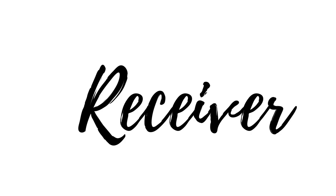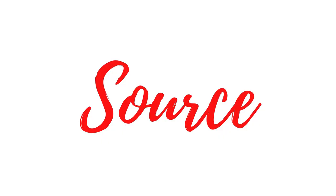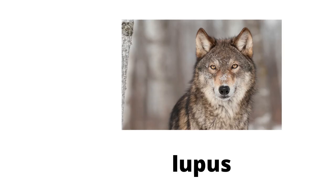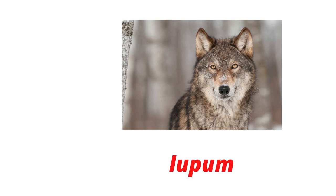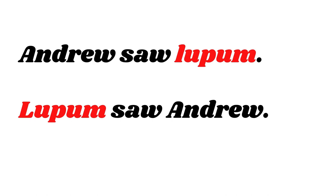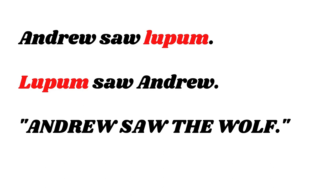Old English had case markings to show who was the doer of the action, who was the receiver of the action, who owns an object, where the object came from, and where the object was going to. This means that even if you change the order of the words, the sentence will mean the same thing. For illustration, the word wolf in Latin is lupus if it is the doer of an action, but lupum if it was the receiver of an action — so 'Andrew saw lupum' and 'lupum saw Andrew' both mean 'Andrew saw the wolf,' even if the ordering of the words is different.